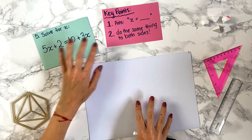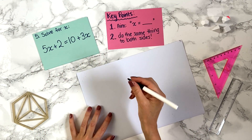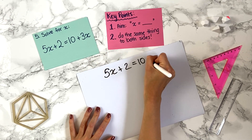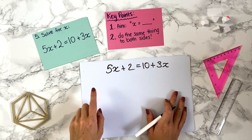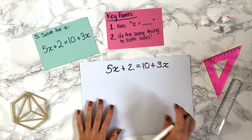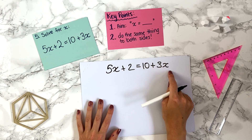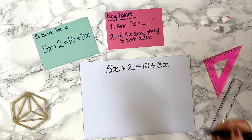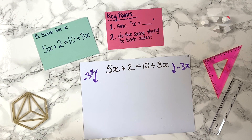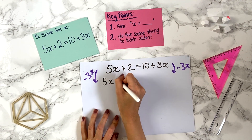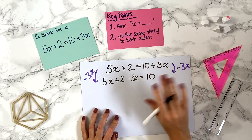Question five: solve for x, 5x plus 2 equals 10 plus 3x. We want the x's on one side and numbers on the other. Let's bring the x's to the left-hand side by getting rid of the 3x on the right. We minus 3x from both sides: 5x plus 2 minus 3x on the left equals 10, because 3x minus 3x is zero.